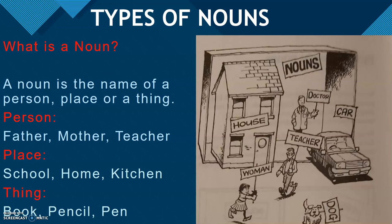A place, for example: school, home, kitchen, bedroom, university, college. And thing, for example: book, pencil, pen, a laptop, or a mobile phone.